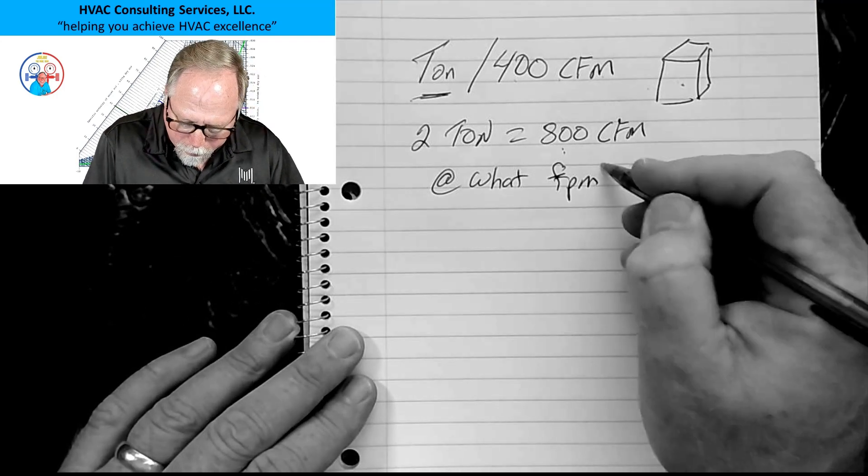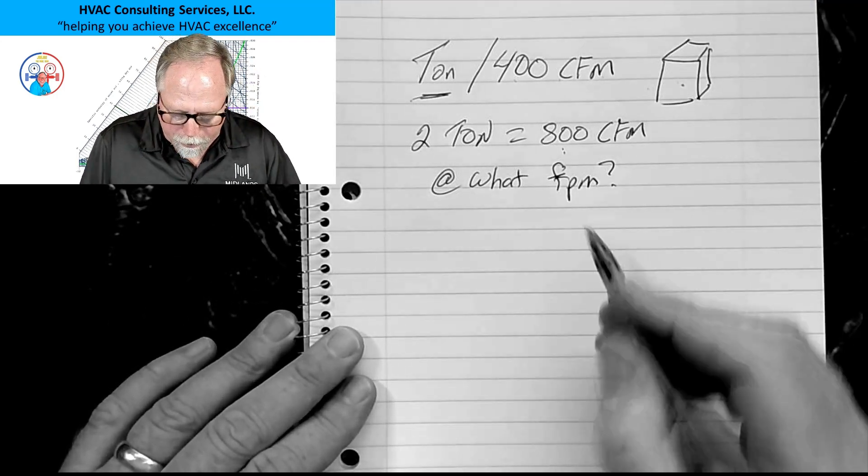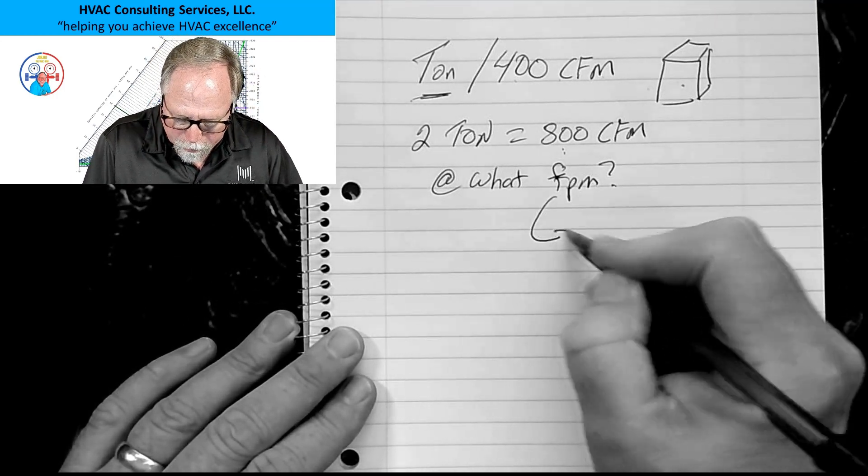For instance, two ton is going to equal 800 cubic feet per minute of air. Now, if you've been around in the field and in school a little bit, this is pretty elementary. But what we don't know is this: 800 at what feet per minute?